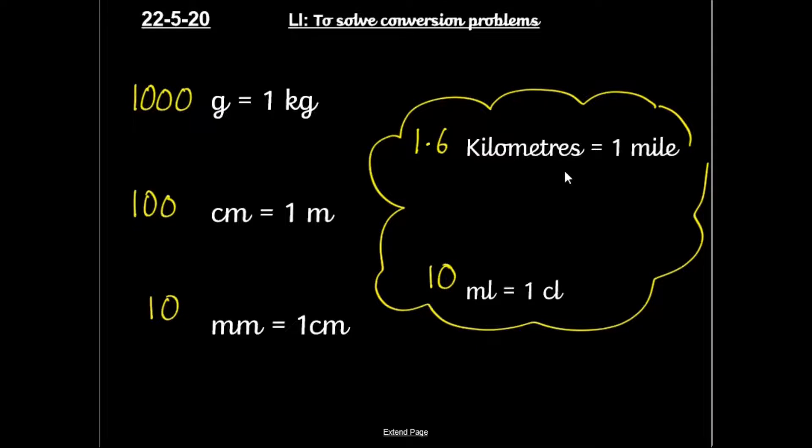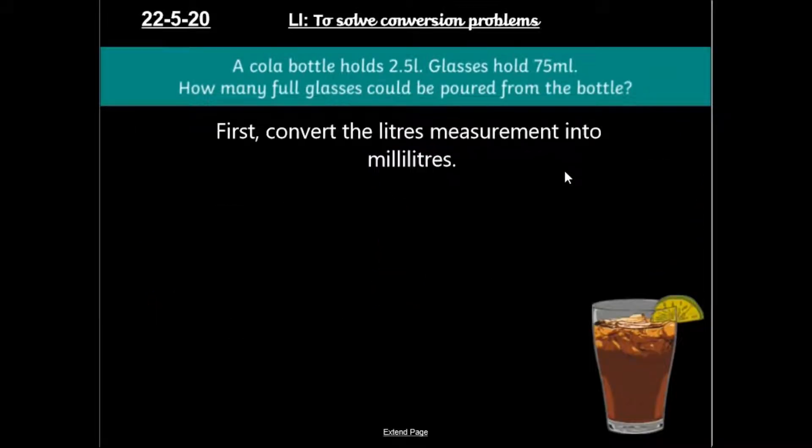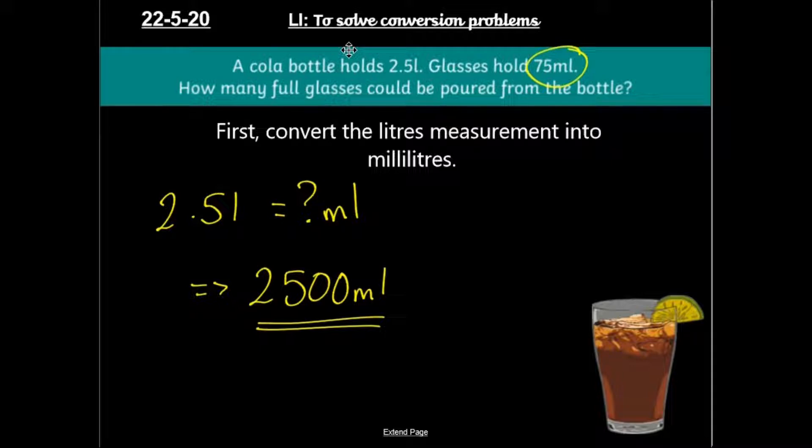Now then, looking at our first problem for today. A cola bottle holds 2.5 litres and glasses hold 75 millilitres. How many full glasses could be poured from the bottle? Now first, you're going to have to convert the litres measurement into millilitres. Remember, I want these two units of measurement to be the same. So 2.5 litres is how many millilitres? Well, as we were doing yesterday, I'm going to be timesing that by a thousand. So 2.5 litres is equal to 2,500 millilitres. So I've now got the same units of measurement.